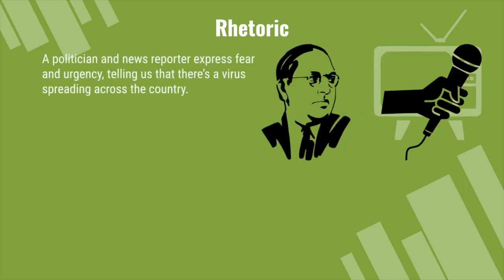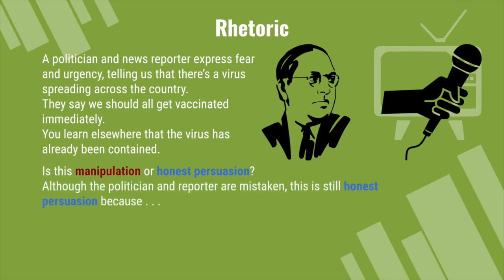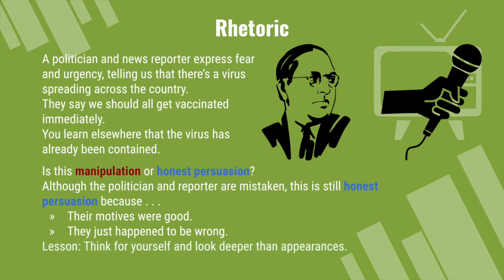A politician and a news reporter express fear and urgency, telling us that there is a virus spreading across the country. They say we should all get vaccinated immediately. You learn elsewhere that the virus has already been contained. Is this manipulation or honest persuasion? Although the politician and reporter are mistaken, it is still honest persuasion, because their motives were good — they just happened to be wrong. It doesn't mean it's manipulation just because they're wrong. They were honestly trying to persuade. The lesson, again, is think for yourself and look deeper than appearances.